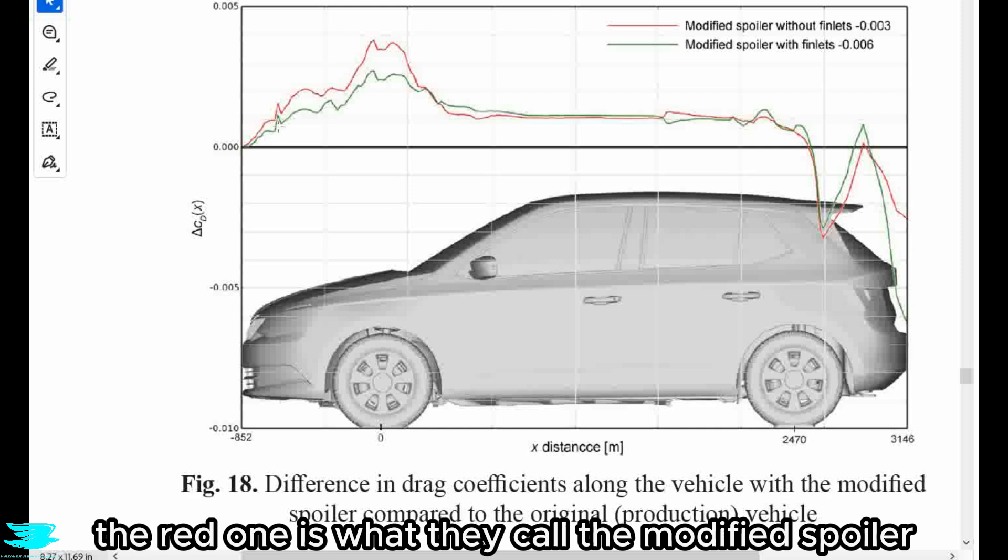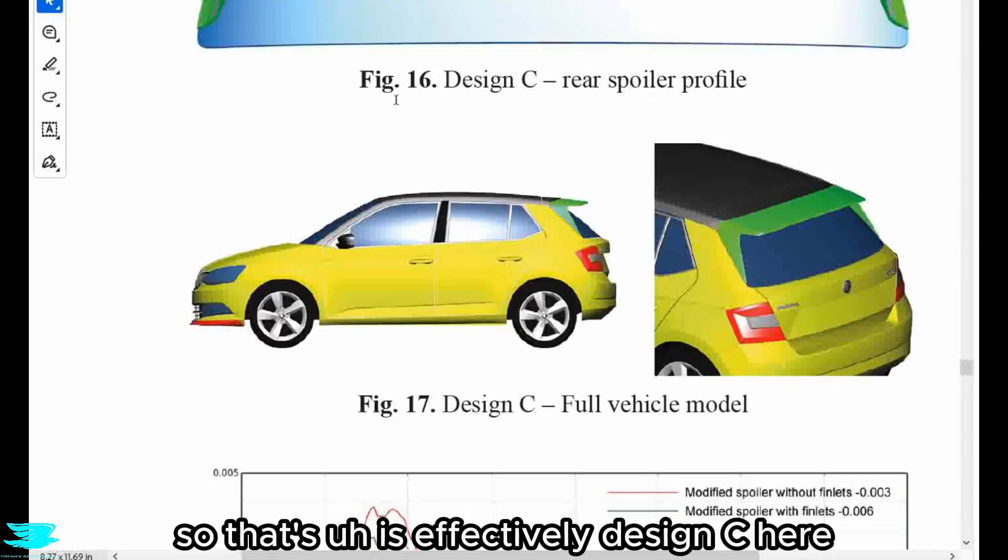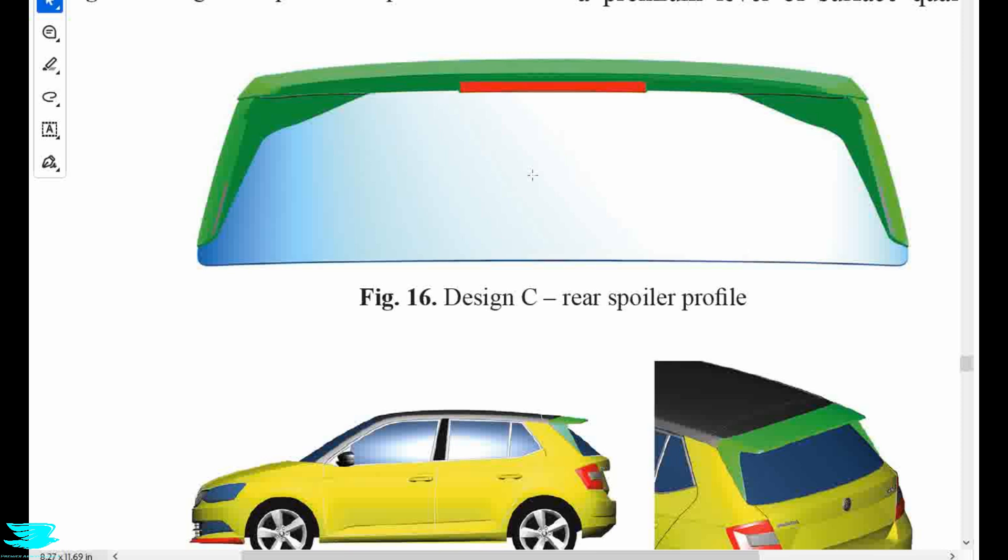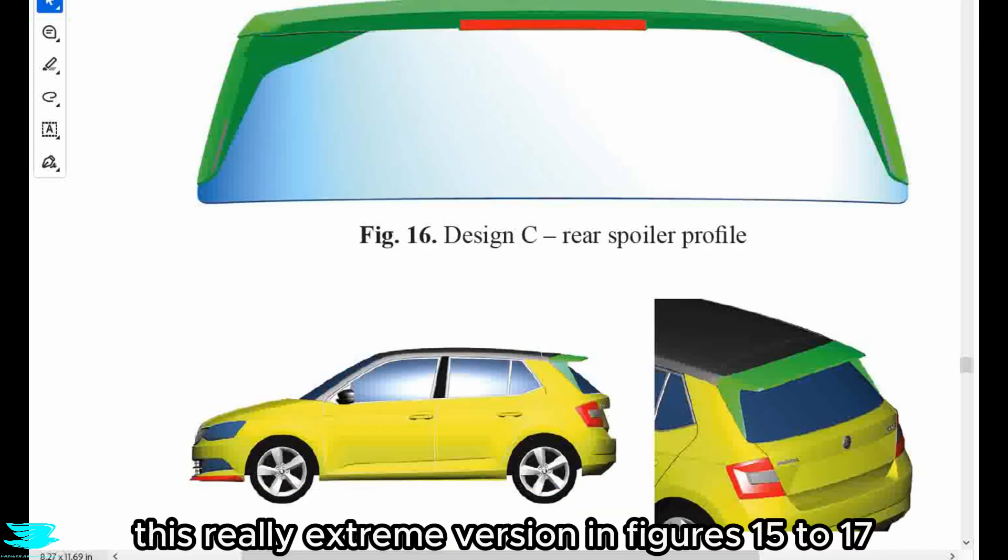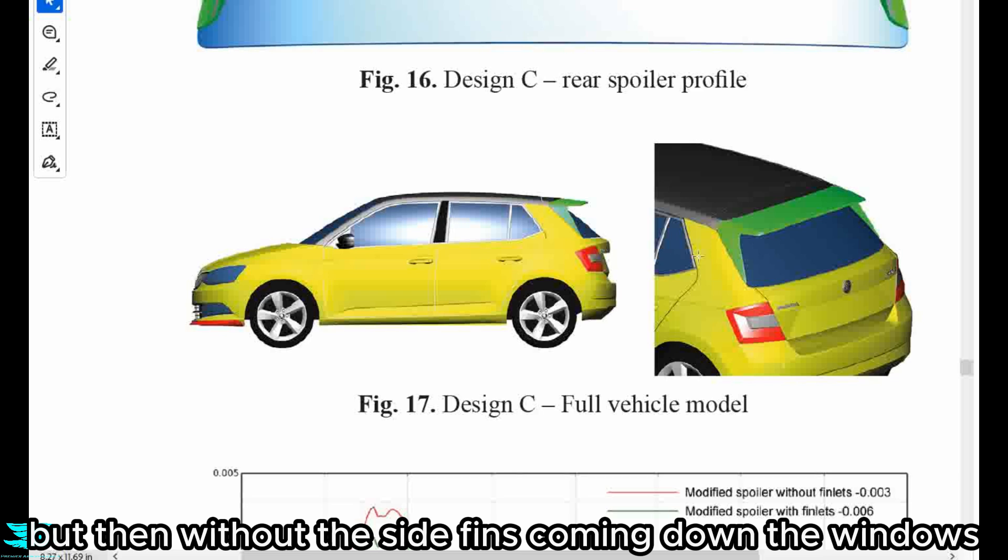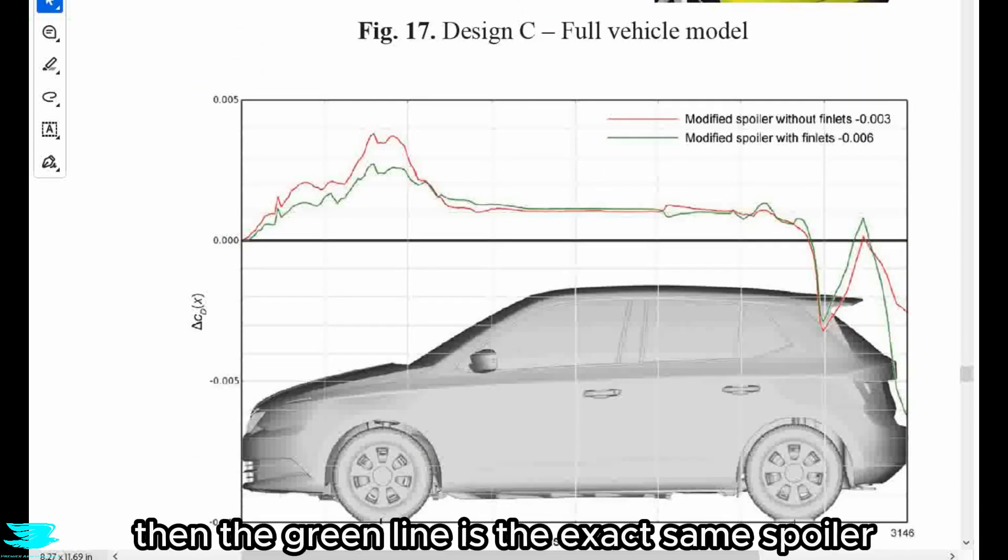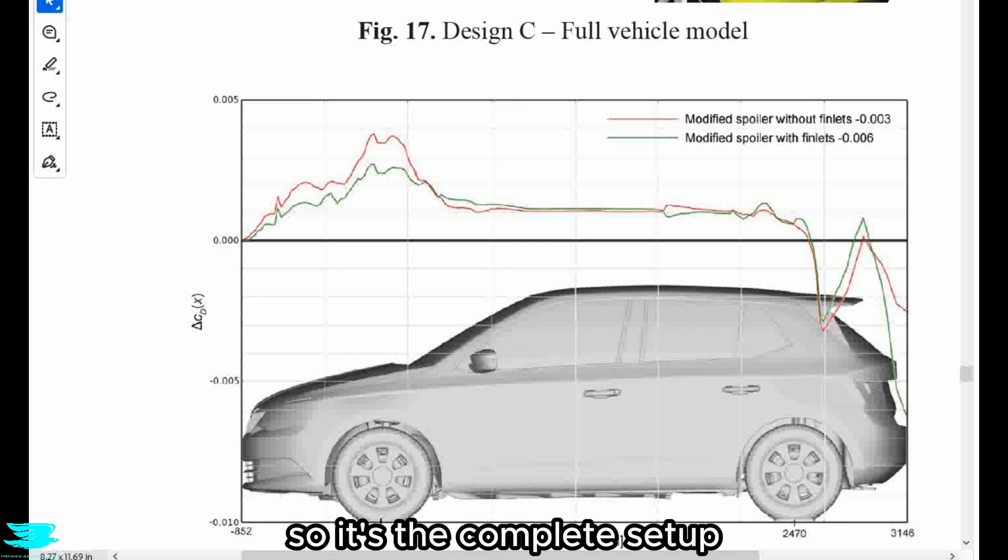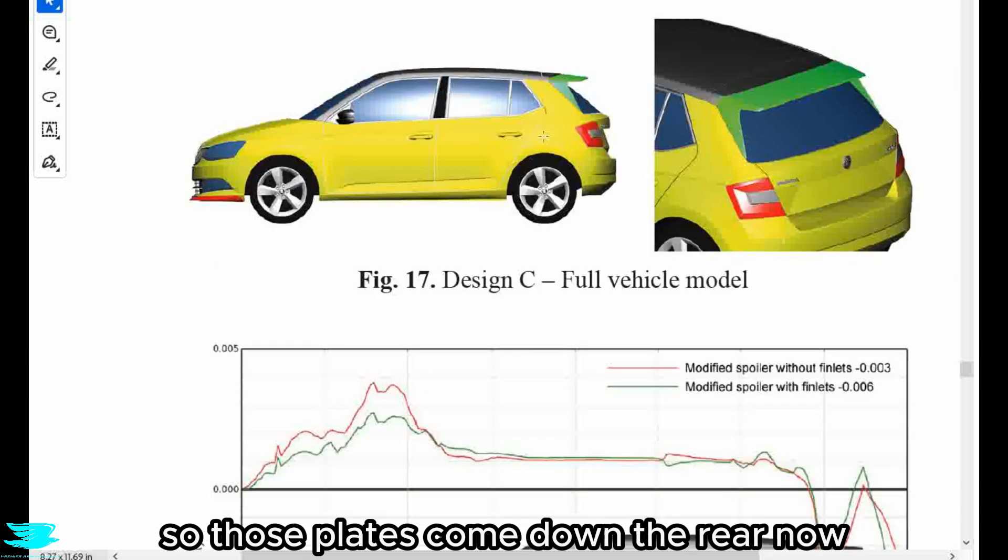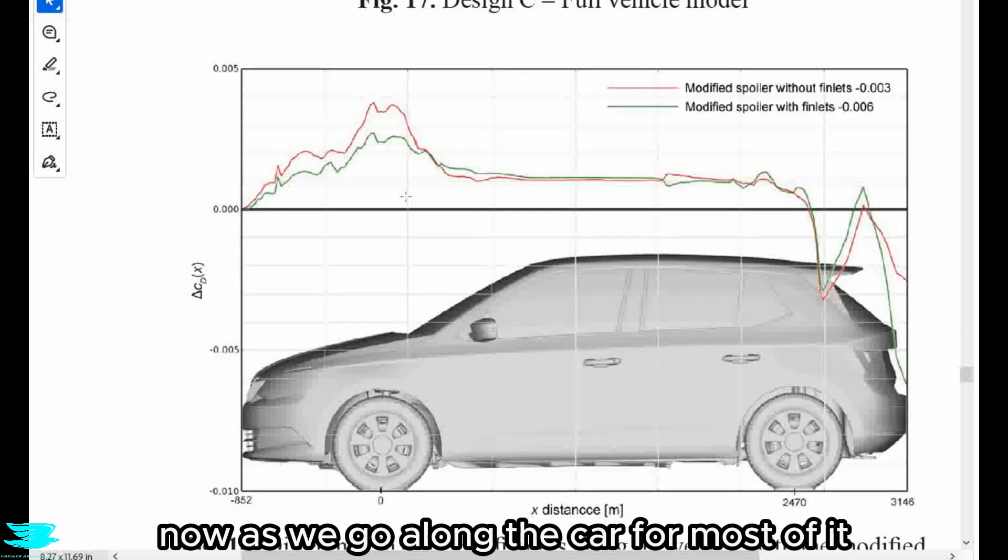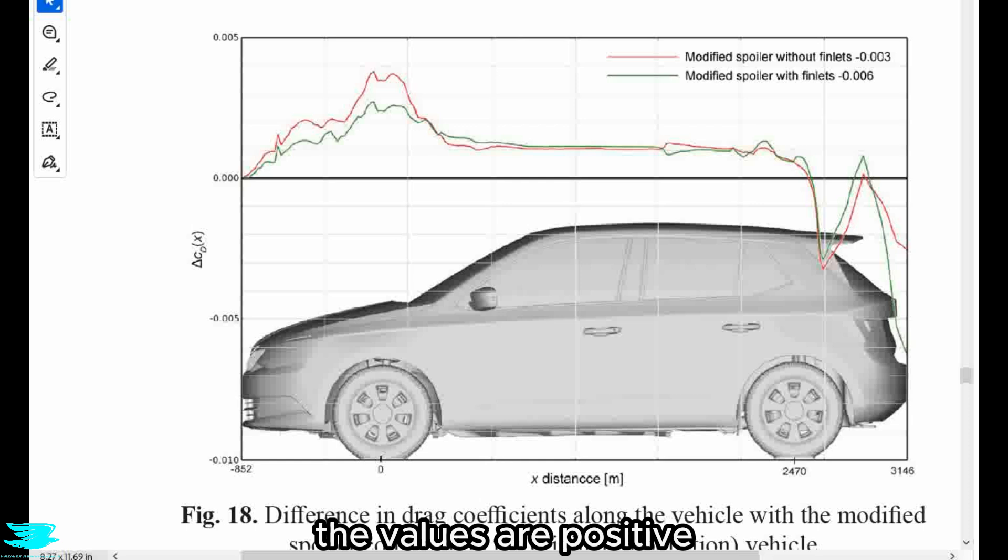So we have two lines, one green one and one red one. Both wiggle around. The red one is what they call the modified spoiler. So that is effectively design C here, this really extreme version in figures 15 to 17, but then without the side fins coming down the windows too. So it's just the large spoiler. Then the green line is the exact same spoiler, but now with those finlets. So it's the complete setup. So those plates come down the rear now.